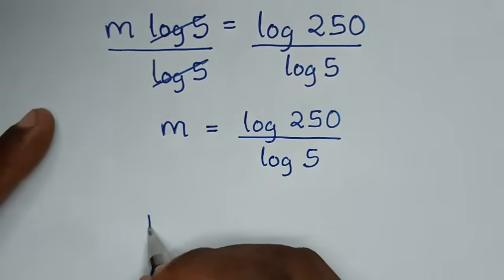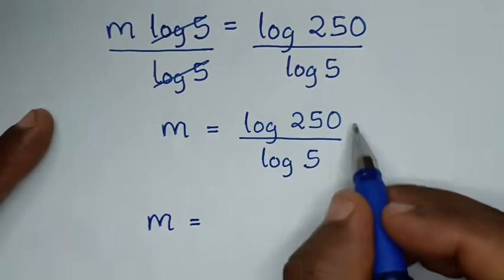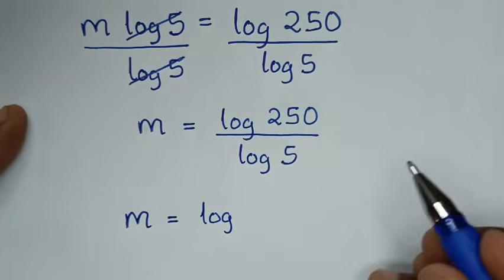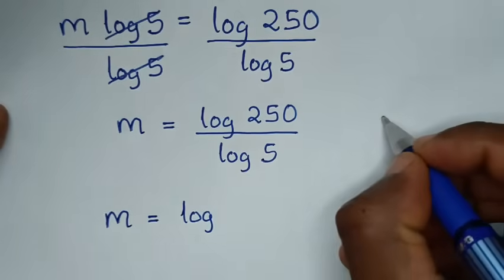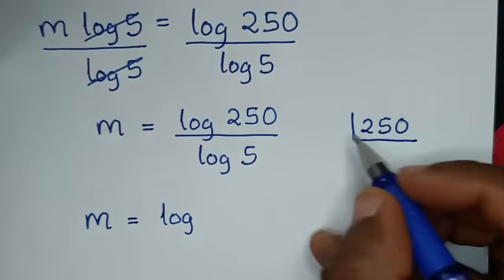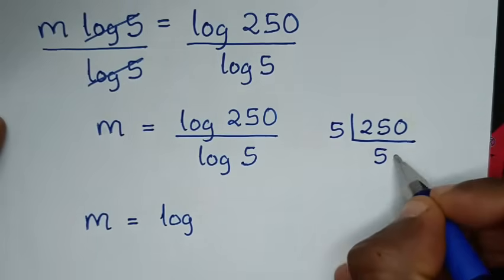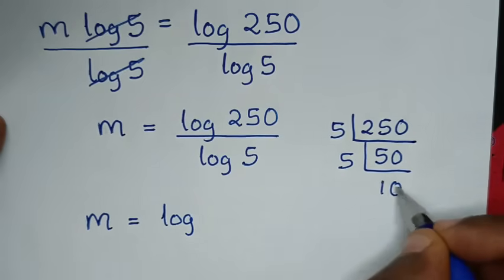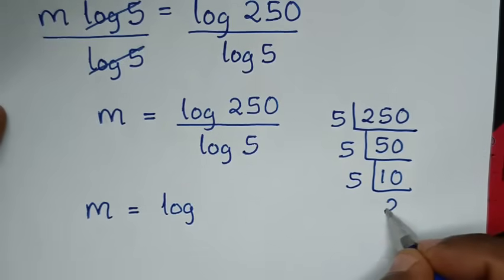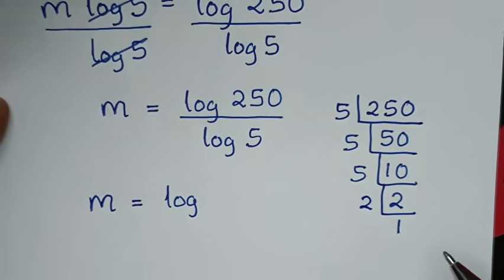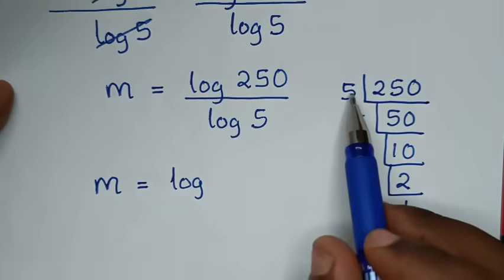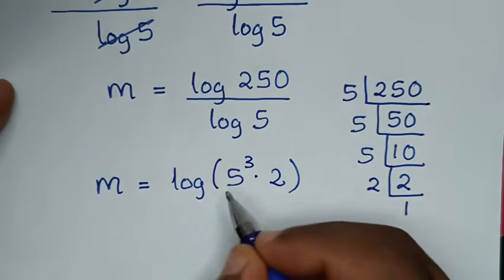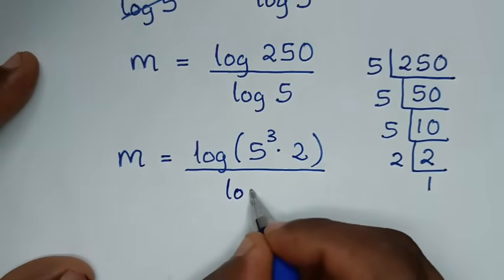Then in the next step, this is not in the simplest form. So to simplify, we find the prime factors of 250. From 250, dividing by 5 gives 50, then 50 divided by 5 is 10, then 10 divided by 5 is 2, then 2 divided by 2 is 1. So 250 is the same as 5 times 5 times 5, which is 5 power of 3, times 2, all over log of 5.